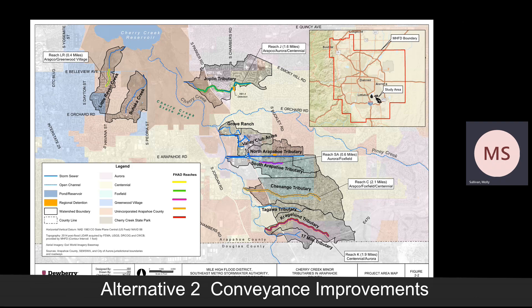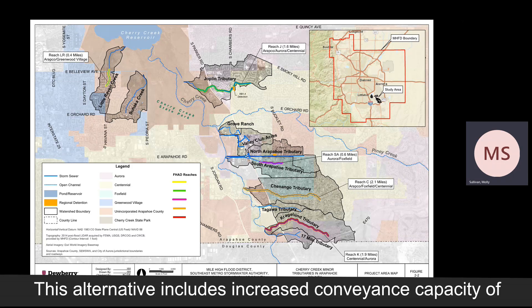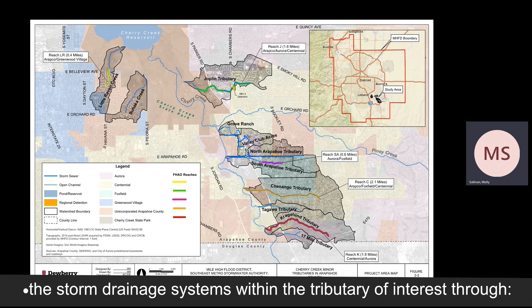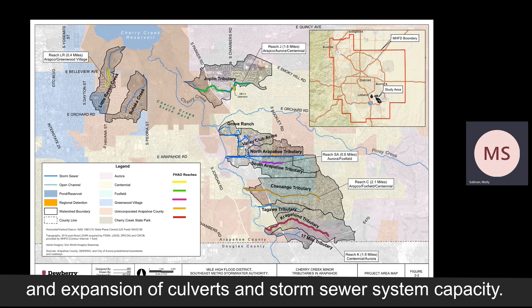Alternative 2 includes infrastructure required to increase conveyance capacity of the storm drainage systems within the tributaries through channel improvements, channel stabilization measures, and expansion of culvert and storm sewer system capacity.